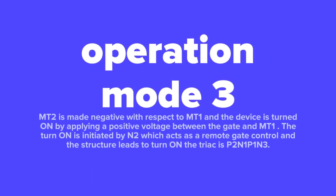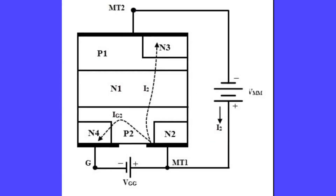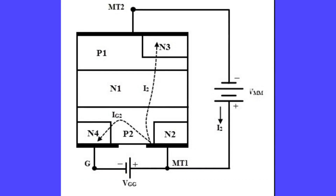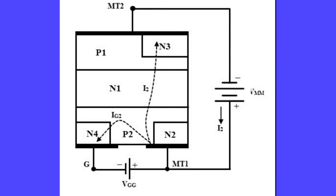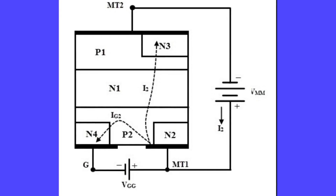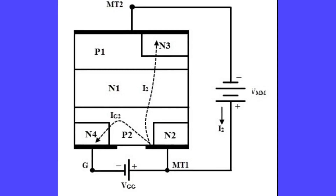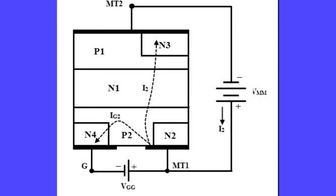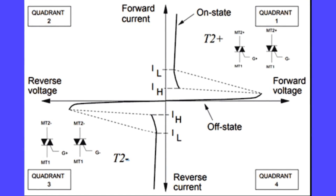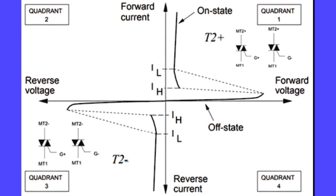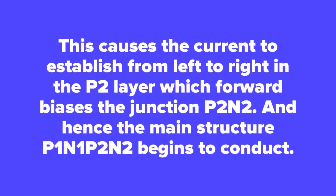In Mode 3, MT2 is made negative with respect to MT1, and the device is turned on by applying a positive voltage between the gate and MT1. The turn-on is initiated by N2, which acts as a remote gate control, and the structure that leads to turn-on is P2-N1-P1-N3. The external gate current forward biases the junction P2-N2. The N2 layer injects electrons into the P2 layer, which are then collected by the P2-N1 junction, increasing the current flow through that junction. This further raises the potential between P2-N2 towards the potential of MT2, causing current to establish from left to right in the P2 layer, forward biasing junction P2-N2. Hence the main structure P1-N1-P2-N2 begins to conduct.